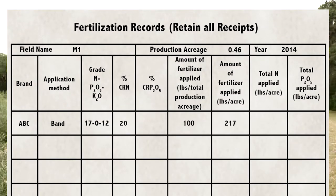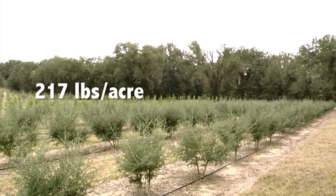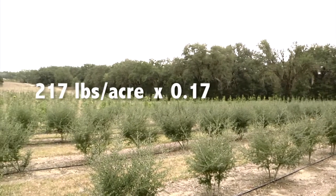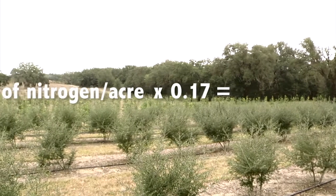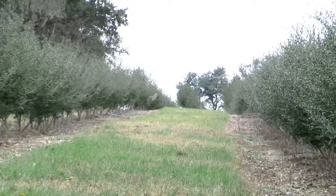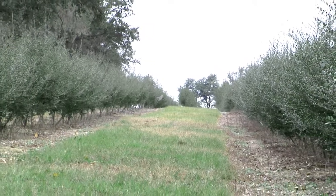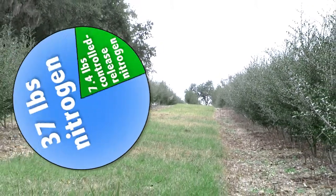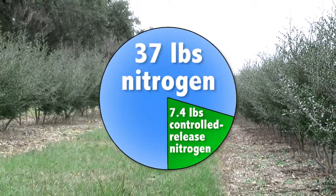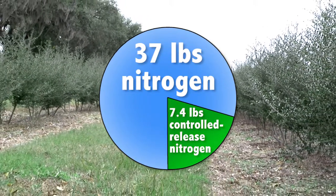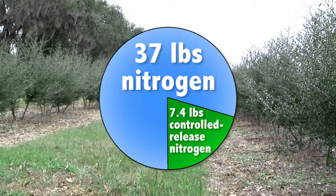To calculate the amount of nitrogen applied, multiply 217 times 17%. Thus, 37 pounds of nitrogen were applied per acre. The fertilizer contained 20% controlled release nitrogen, so 20% of 37, or 7.4 pounds, of controlled release nitrogen were applied.